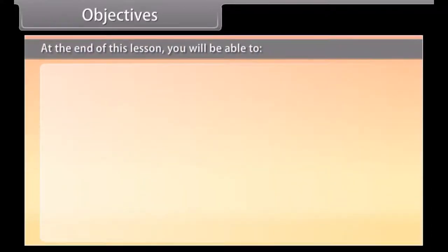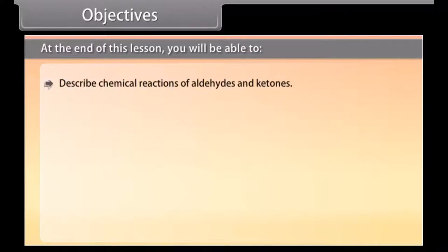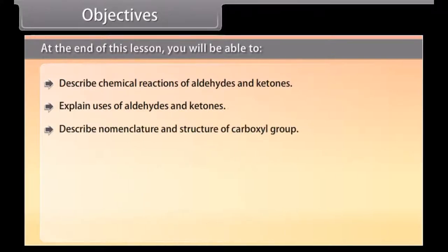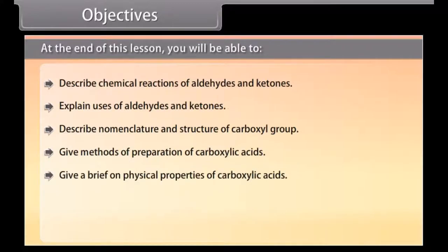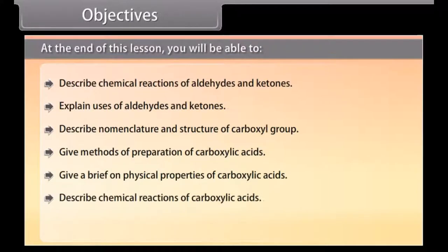At the end of this lesson, you will be able to: describe chemical reactions of aldehydes and ketones; explain uses of aldehydes and ketones; describe nomenclature and structure of carboxyl group; give methods of preparation of carboxylic acids; give a brief on physical properties of carboxylic acids; describe chemical reactions of carboxylic acids; and mention uses of carboxylic acids.